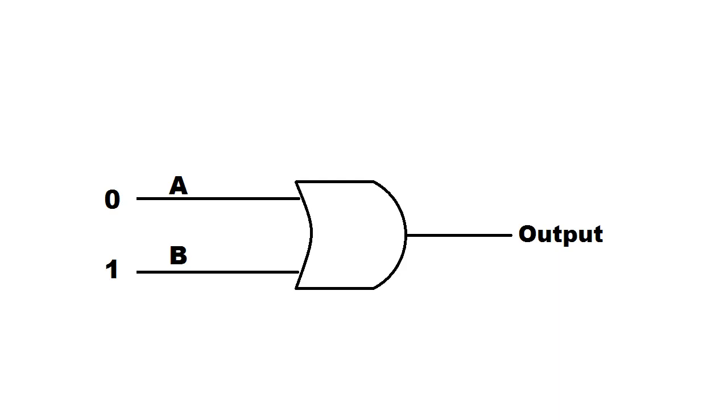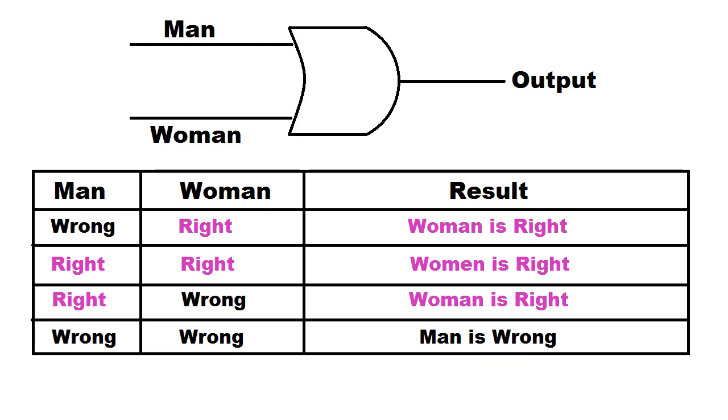This is the symbol of OR logic gate. It has two input terminals and one output terminal. Let's consider one input terminal represented by man and another input terminal represented by woman. Now we can call it a marriage logic gate.